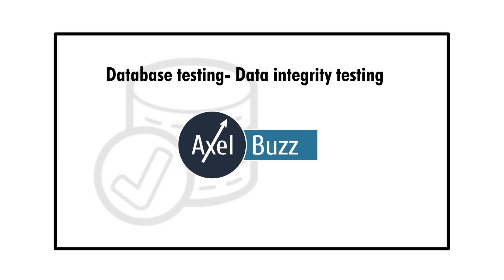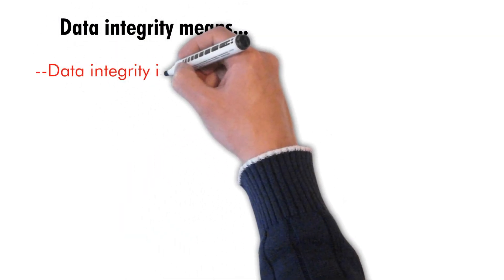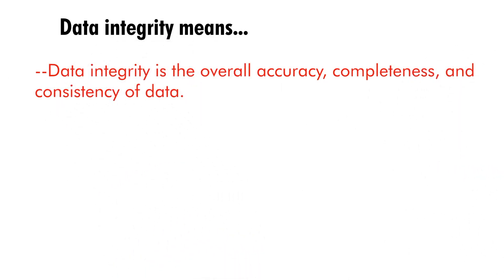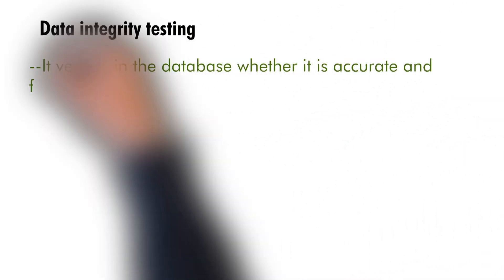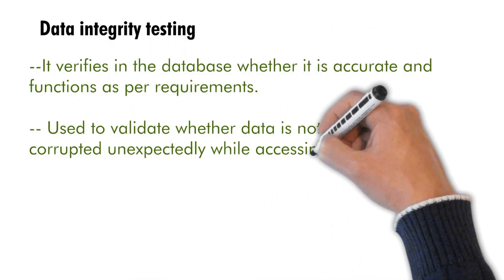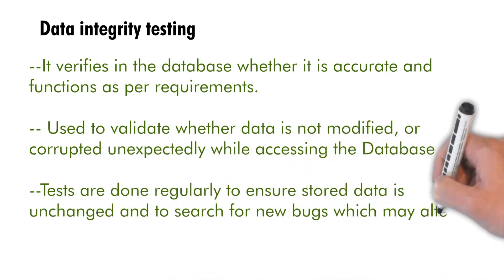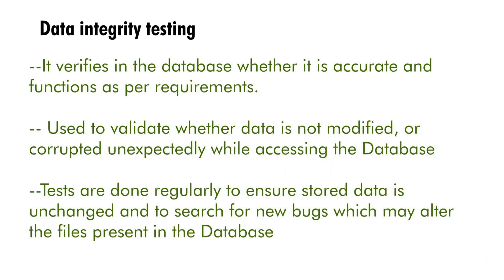Today's topic is data integrity testing. Data integrity is the overall accuracy, completeness, and consistency of data — one of the main points to consider while doing database testing. Data integrity testing verifies whether the database is accurate and functions as per requirement. It is used to validate whether data is not modified or corrupted unexpectedly while accessing the database, and these tests are done on a regular basis to ensure stored data is unchanged and to search for new bugs.